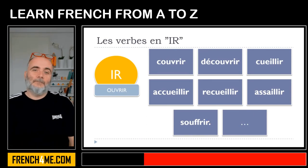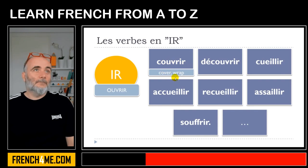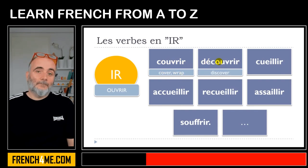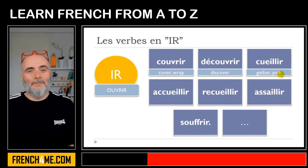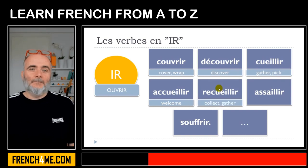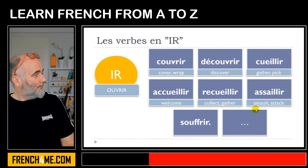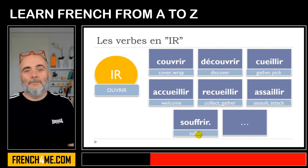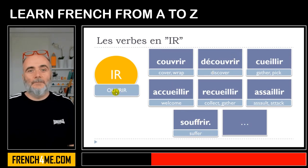And of course, I'll give you the translations. Couvrir means to cover or to wrap. Découvrir, to discover. Cueillir, to gather or pick. Accueillir, to welcome. Recueillir, to collect or gather. Assaillir, to assault or attack. And then souffrir, to suffer. So these verbs will be conjugated the same way ouvrir is, and it's not that difficult.